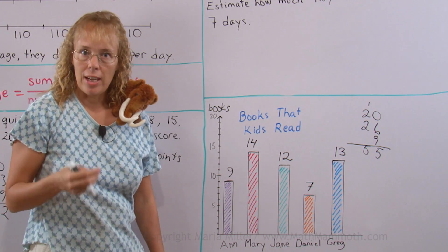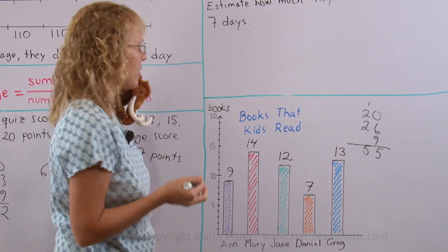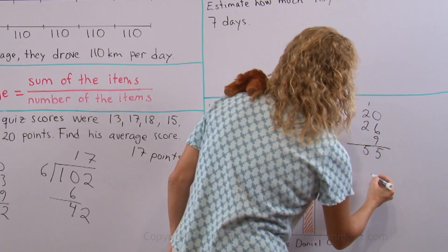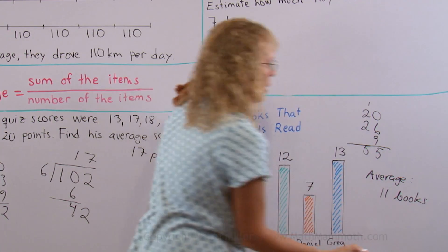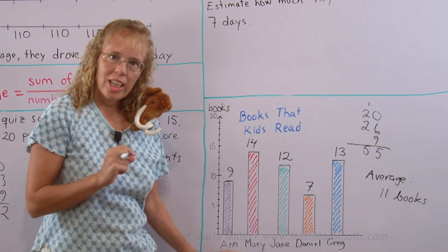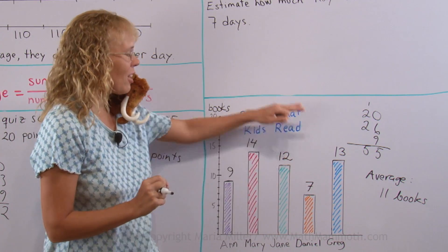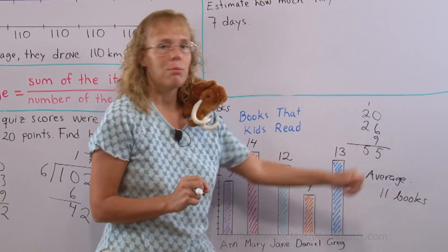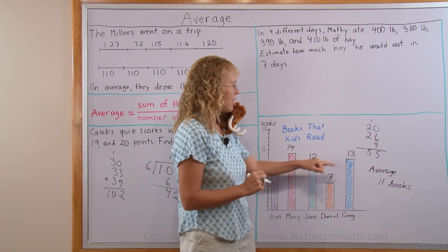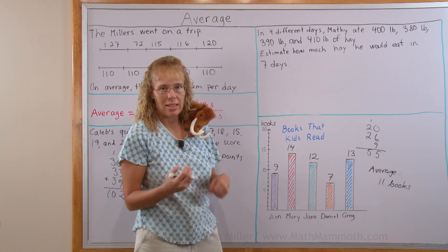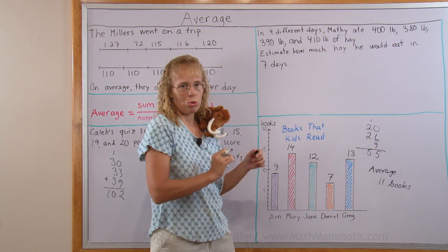And then I divide that by however many there are. 1, 2, 3, 4, 5. 55 divided by 5. That's easy. Okay. The average is 11 books. This means that if each kid here had read 11 books then the total number of books would have been the same. 55 books total. Okay. But in reality it varies. Some kids read more than 11 and some kids read less than 11. But 11 is kind of like a middle number so to speak.